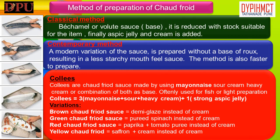This contemporary method is also faster to prepare. Cornstarch mixed with wine is added to reduced cream, seasoned and finally finished with hot aspic jelly. Glacé: Glacé are chaud-froid sauces made by using mayonnaise, sour cream, heavy cream, or a combination of both as a base, and are often used for fish preparations. The formula is: 3 parts mayonnaise plus sour cream plus heavy cream, to 1 part strong aspic jelly.